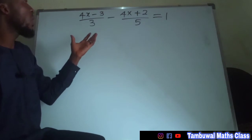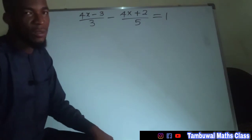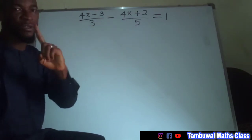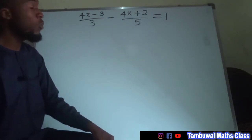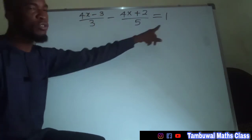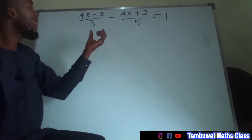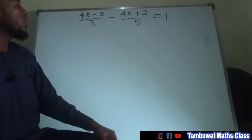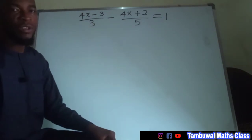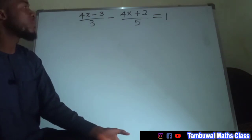There are two methods you can follow to solve this algebraic fraction. First, you can transform these two units of fractions into a single fraction, or you can multiply each of these terms by the LCM, which is the lowest common multiple of the denominators. The only denominators we have here are three and five, and the lowest common multiple of three and five is fifteen.